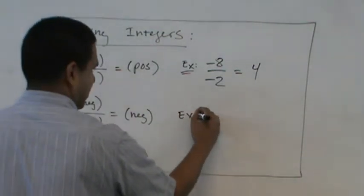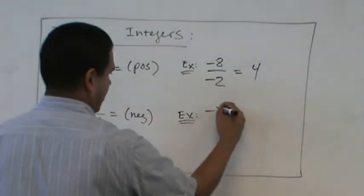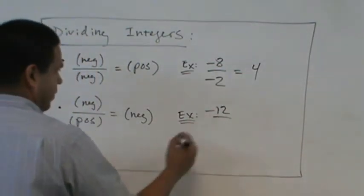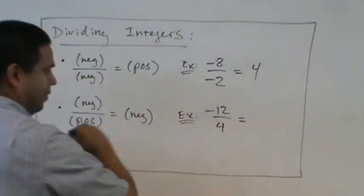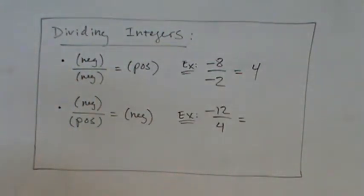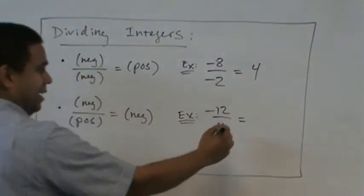In an example, what do we get? Negative three.